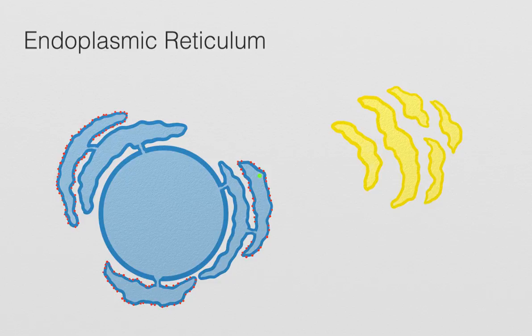Proteins destined for these other locations first pass through the ER, where they get modified, folded, and packaged into vesicles that fuse with the Golgi apparatus. In the Golgi, the proteins are further modified and packaged into vesicles that get sorted to various locations in the cell. We'll talk more about these processes in future Cell Clips videos, but today we will focus on how these proteins get imported into the ER.